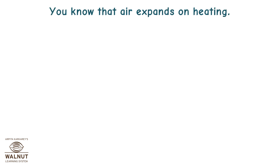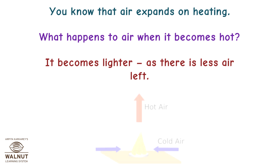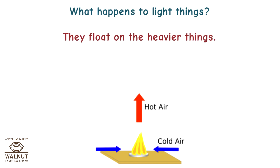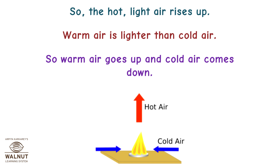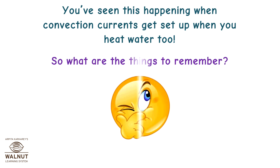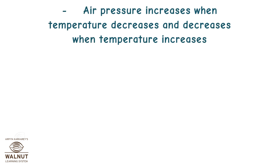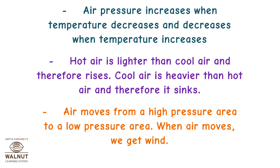You know that air expands on heating. When air becomes hot, it becomes lighter as there is less air left. Light things float on heavier things, so the hot light air rises up. Warm air is lighter than cold air, so warm air goes up and cold air comes down — just like convection currents when you heat water. Hot air is lighter than cool air and therefore rises; cool air is heavier and therefore sinks. Air moves from a high pressure area to a low pressure area, and when air moves, we get wind.